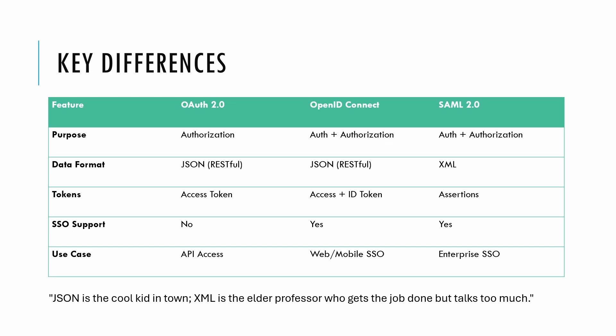Here's a fun take: JSON is the cool kid in town — fast, modern, and versatile. XML on the other hand is like the elder professor — verbose and formal, but reliable.